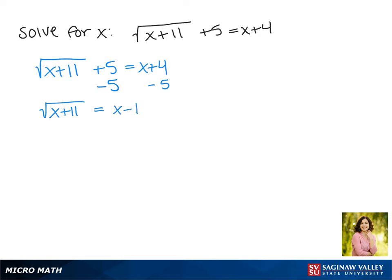Now we can square both sides. On the left, that gets rid of our square root, leaving us with x plus 11, and on the right we get x minus 1 times itself. Foiling out the right side gives us x squared minus 2x plus 1.